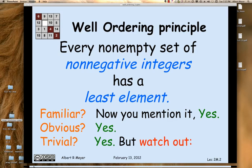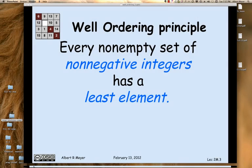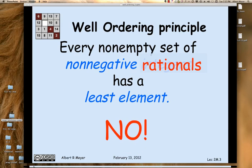I want to get you to think about this well-ordering principle a little bit, because there are some technical parts of it that matter. For example, suppose I replaced non-negative integers by non-negative rationals. Does every non-empty set of non-negative rationals have a least element? Well, there is a least non-negative rational, namely 0, but not every non-negative set of rationals has a least element. I'll let you think of an example.